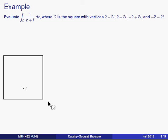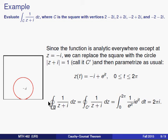I know by the principle of deformation of contours that the value along this square is equal to the value along a circle with radius one centered at minus i. And I know that finding integrals of this type are very simple once I parameterize them. So what I'm going to do is parameterize that circle with radius one centered at minus i. And here's the parameterization that will do that for me.